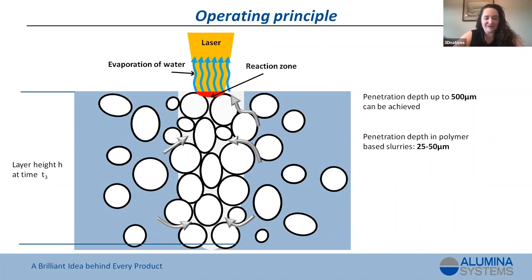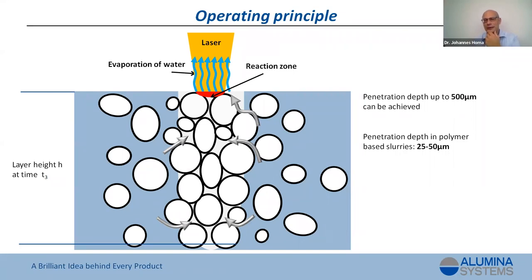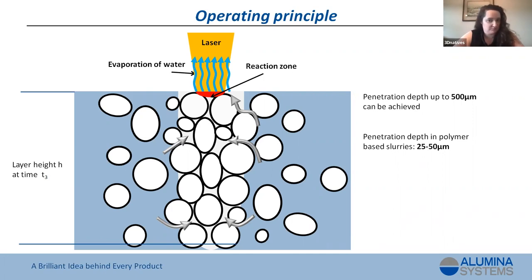Can parts in the LIS process be stacked on top of each other, like nesting in an LPBF process? No — you need support structures to nest in the LPBF process, and since LIS parts are not self-supporting in the same way, it is not possible. The next question: what are the maximum and minimum viscosities of the slurries that can be used in the LIS process? We are using a standard slurry — the same as used for a slip casting process. An exact viscosity value isn't something we can specify by heart right now, but you can essentially mix your slurry and fill it into the printer much as you would for slip casting.